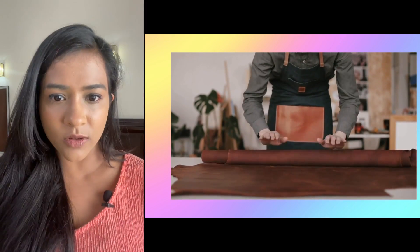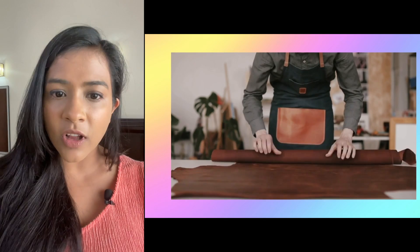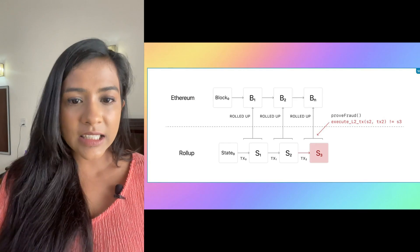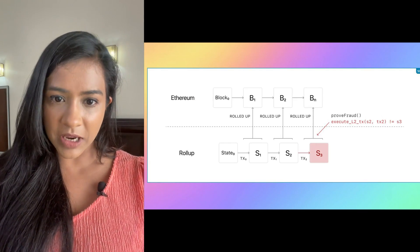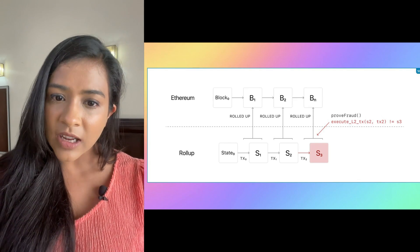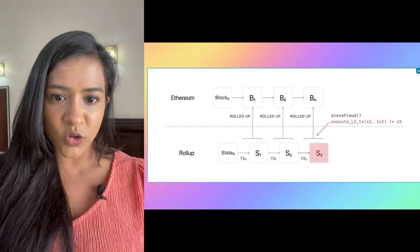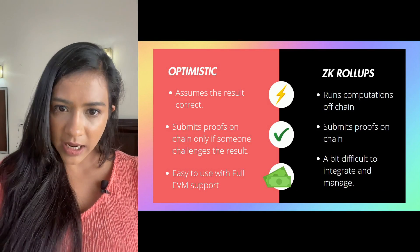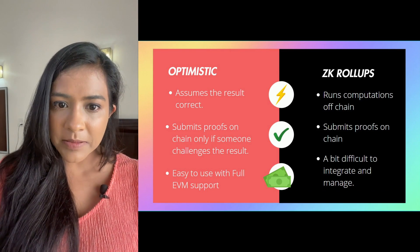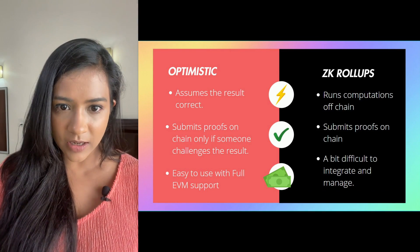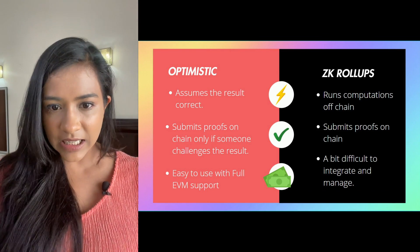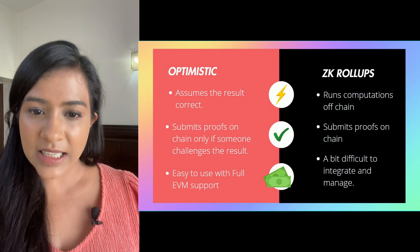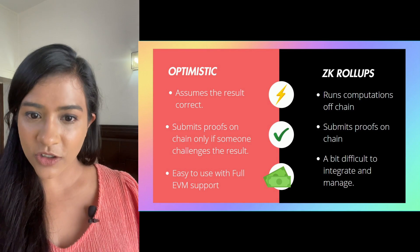In rollups, transactions are executed off-chain and their data or proof of transaction is posted on the main chain. This way, rollups leverage the security of the main chain while offloading the transaction execution off-chain. There are two types of rollups: ZK rollups and optimistic rollups.